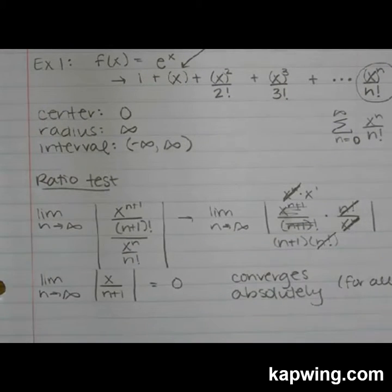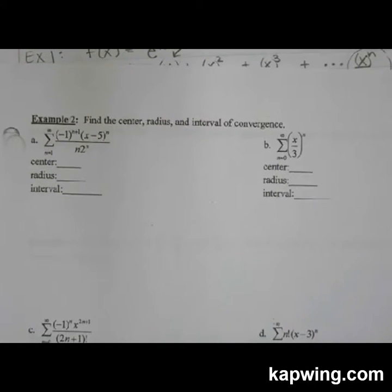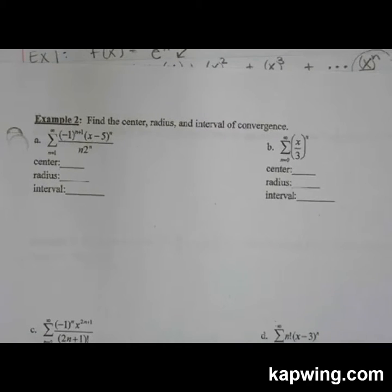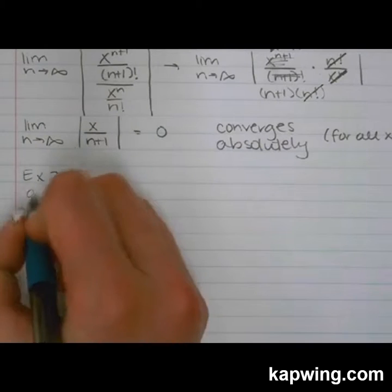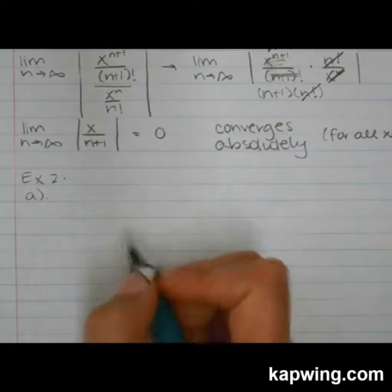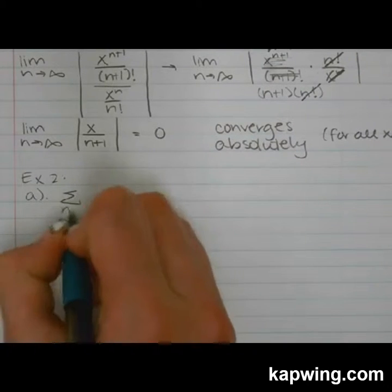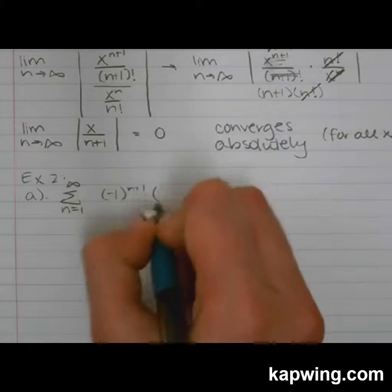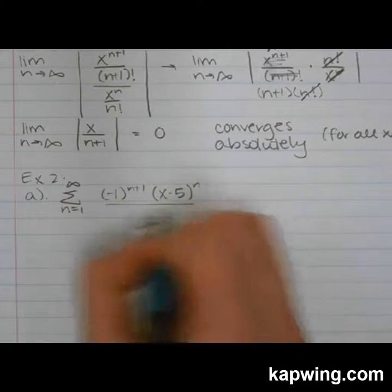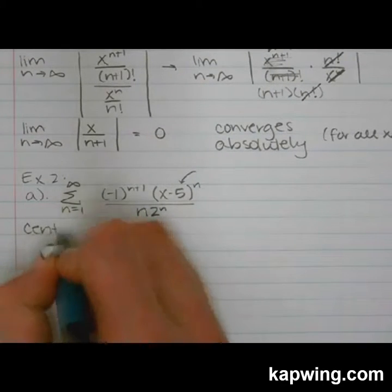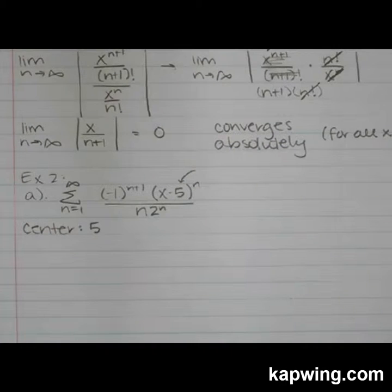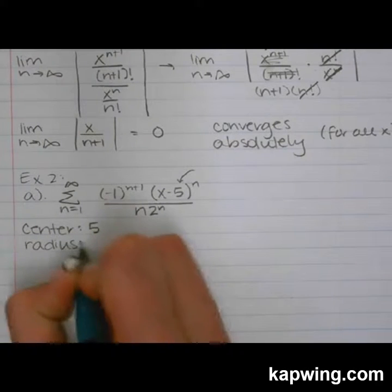Example two is really four examples. We're doing the same sort of thing — looking for the center, the radius, and the interval of convergence. For part A, they're not giving the polynomial form; they're giving it written directly as a series. If you look, you can see what the center is — it's five. The center is whatever is being subtracted from x in the parentheses.